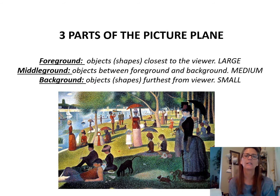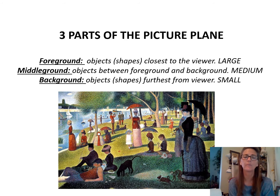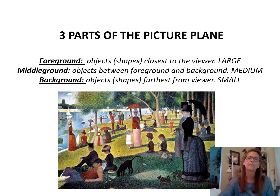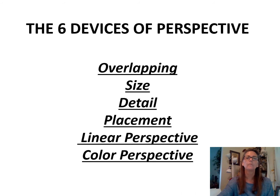Background objects are farther away and they're small. So you have those three different levels: background, middle ground, and foreground in your picture plane. Now you have six different devices: overlapping, size, details, placement, linear perspective, and color perspective.